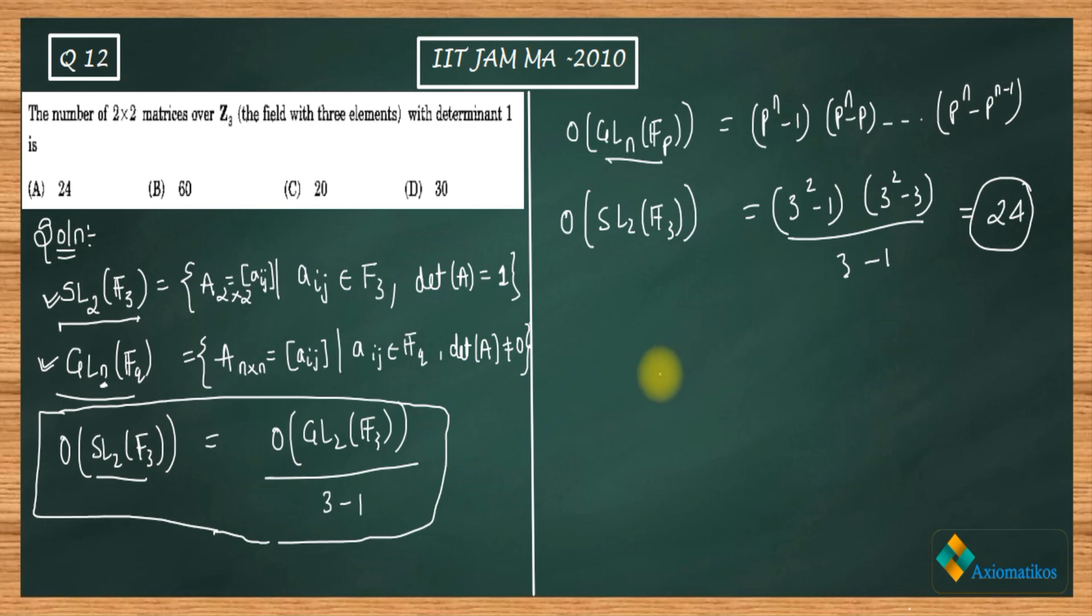It's a one-minute question, nothing else. This is how we can do it. So 24 is your answer, that means A is the correct option. A is correct and all other remaining options are false. Thank you.